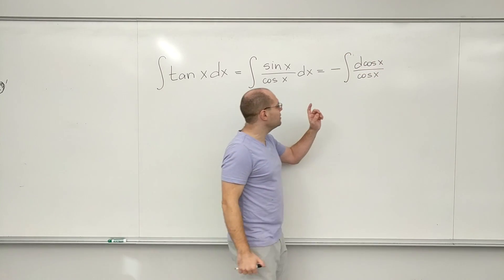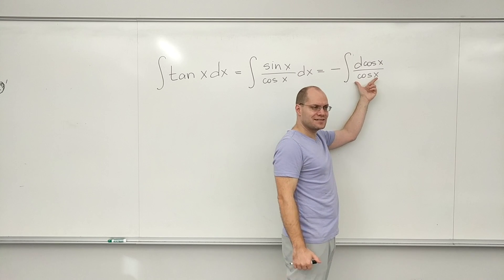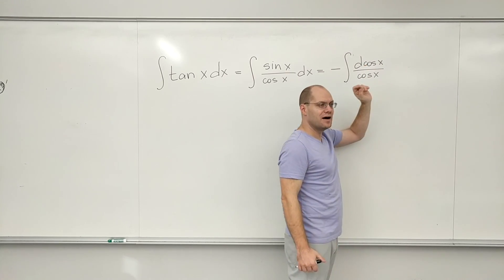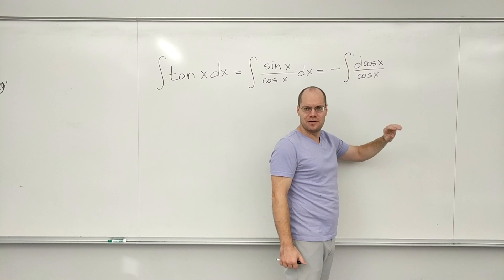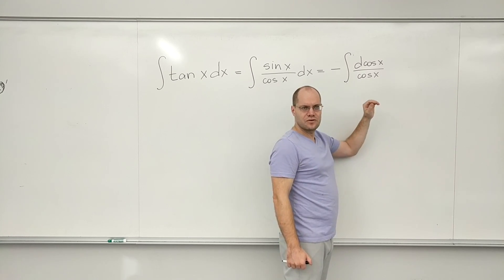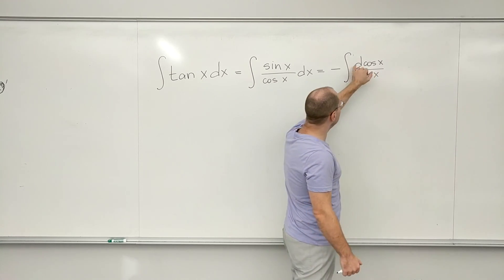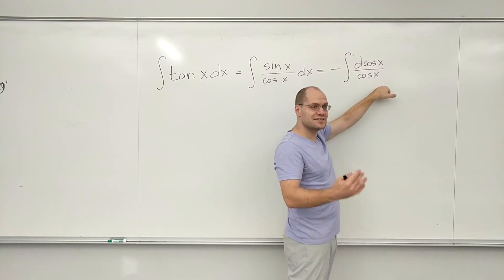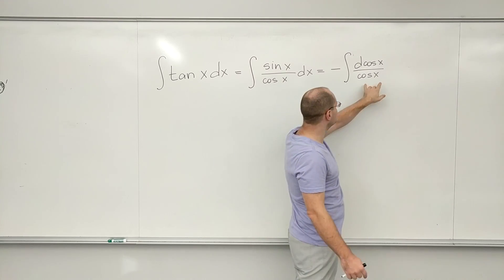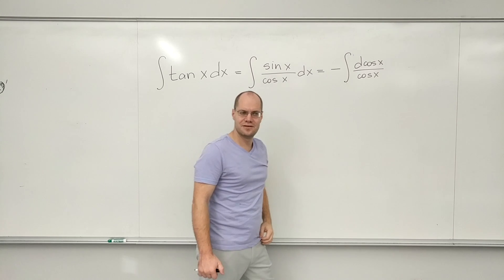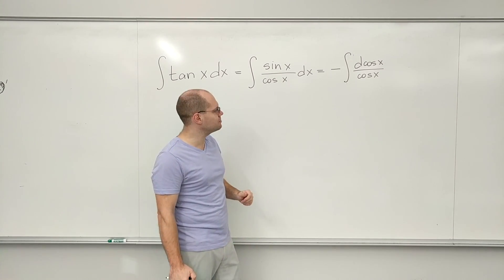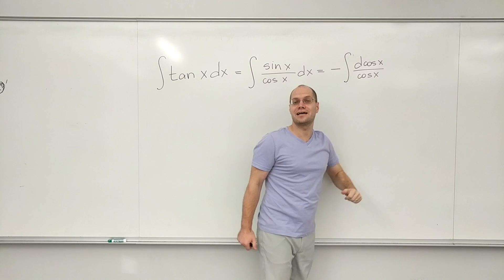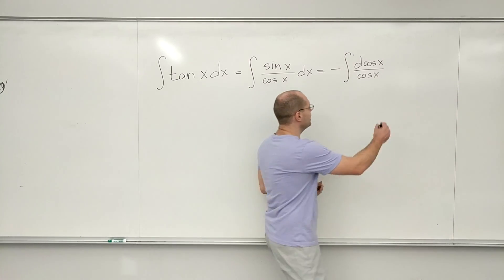And now I no longer think of cosine of x as a function of some variable x, because it's under here now. I just think of it as a single symbol. You initially can think of it as du over u, but after you've done this enough times you don't even need to do that anymore. You just think of this as one symbol, saves you two substitution steps, and you're saying well that's just the integral of one over x, and so it's minus log.